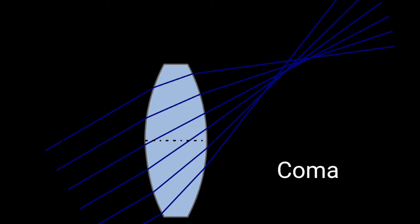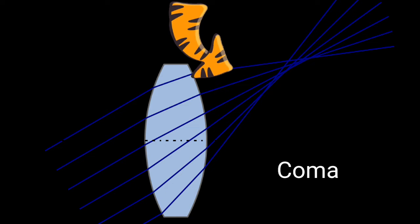The second aberration is coma or comatic aberration. Due to the curvature of principal planes, comatic aberration results, and in this aberration the image appears distorted instead of a point. In this picture you can see how, due to the curvature of the principal plane, the image will be distorted.